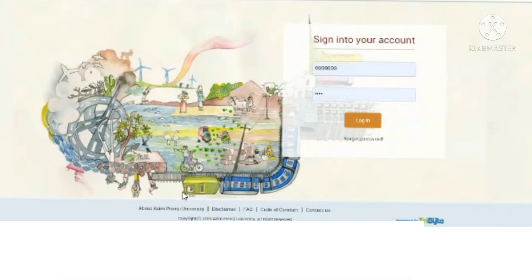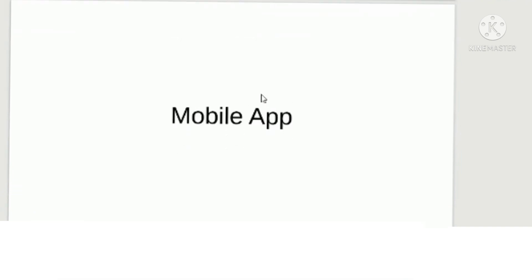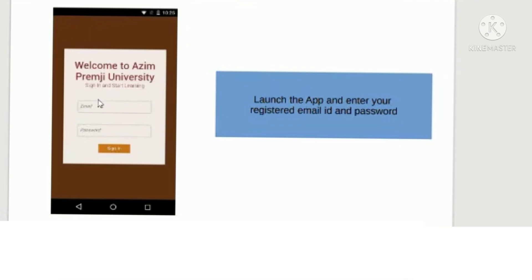Similarly, for the mobile application — if you are using a smartphone or mobile device, here are the steps. You have to go to the Google Play Store and find the Azeem Premji University app. Once you find it, click the install button to install the application. Once installed, you will see a screen where you enter your employee ID and password. The password is 'ELEC', which is common to all of you. After signing in, you can change your password.